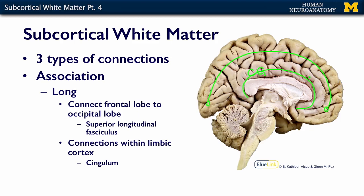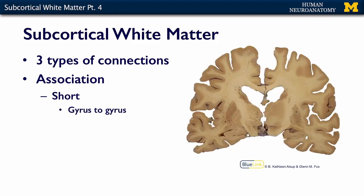So association fibers stay on the same side, but they can go quite a long distance from front to back of the brain. There are also short association fibers, and the short association fibers are the ones that go maybe from one gyrus to another, or maybe across two gyri.